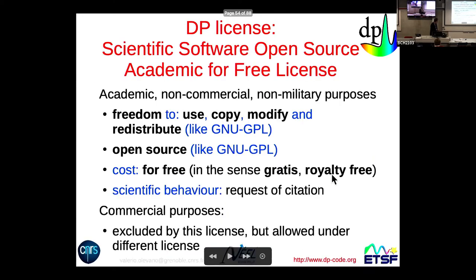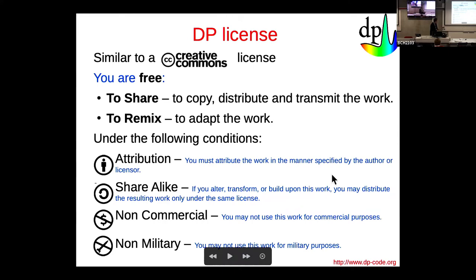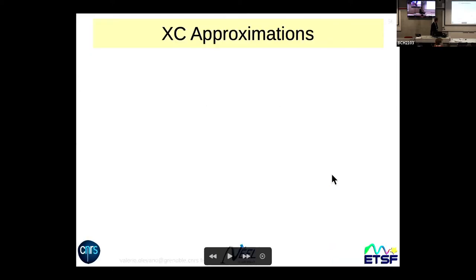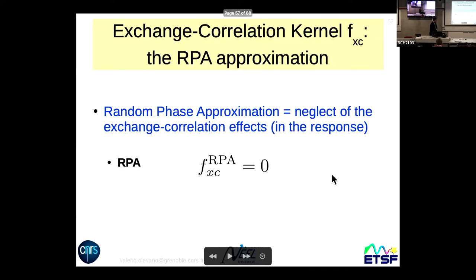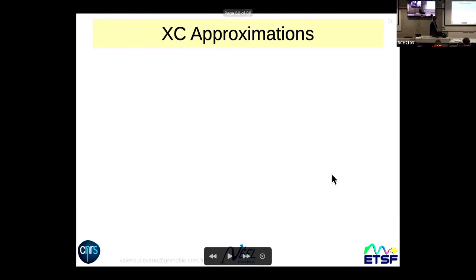The DP code is distributed with an academic license — you can use it freely, but commercial and military uses are excluded. Now let's move to the final part of the lecture, presenting the results obtainable with different approximations.